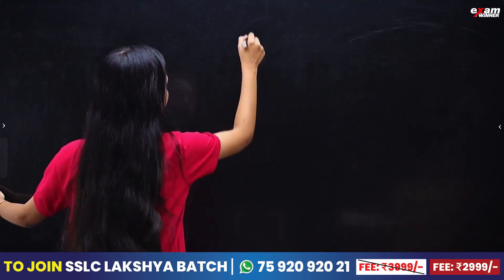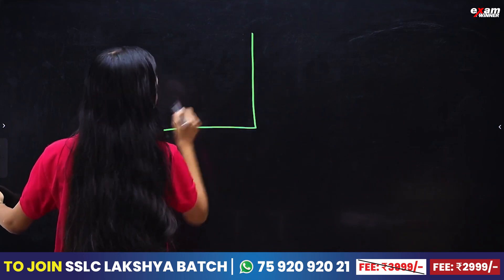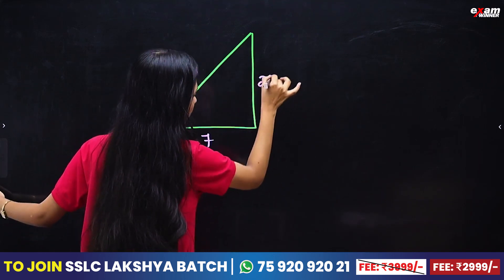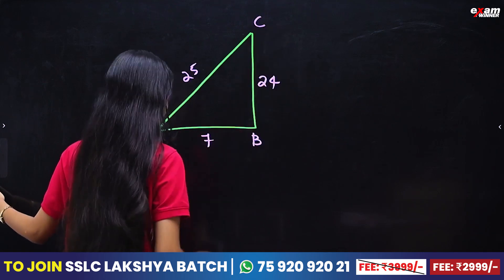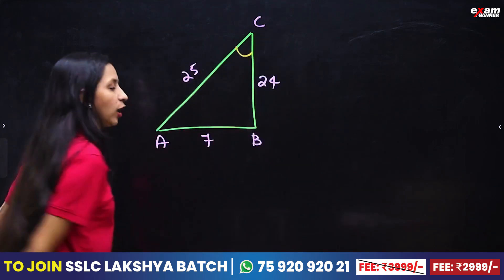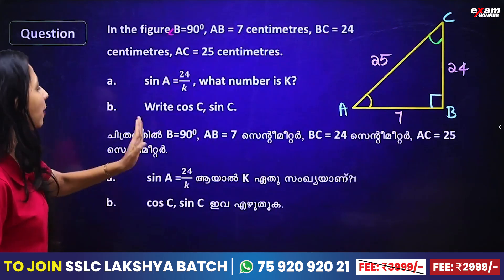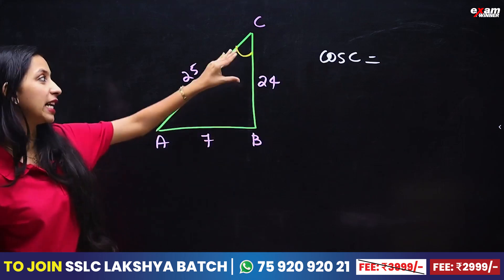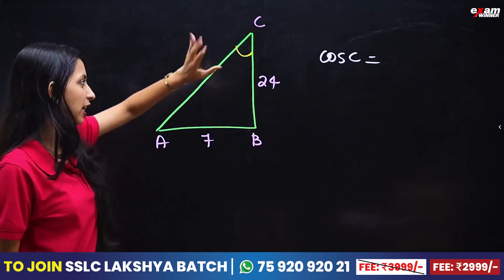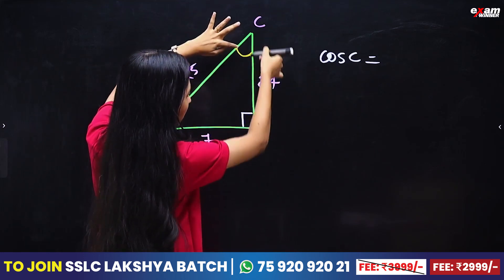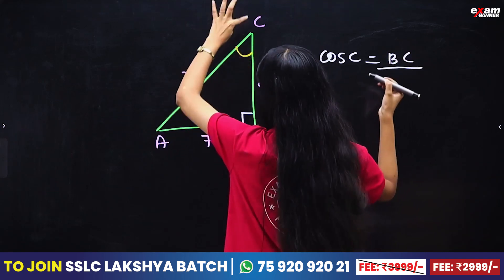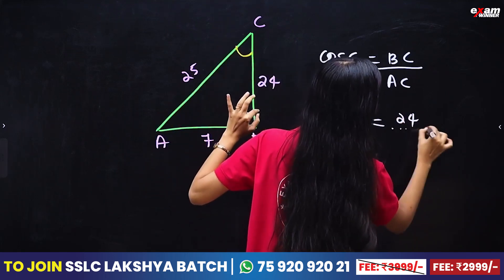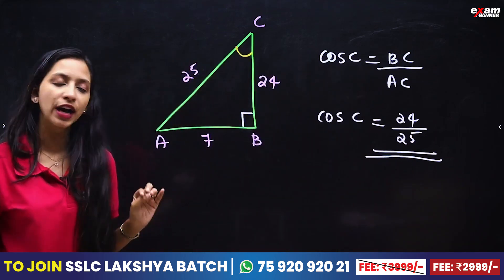Let's draw a right-angle triangle. The hypotenuse is 25, the other sides are 7 and 24 — triangle ABC. Cos C is equal to the adjacent side by hypotenuse. The adjacent side is BC and the hypotenuse is AC. So cos C equals 24 divided by 25.